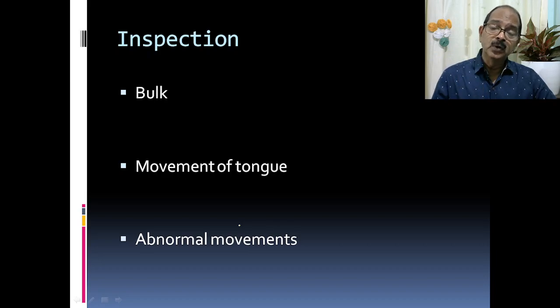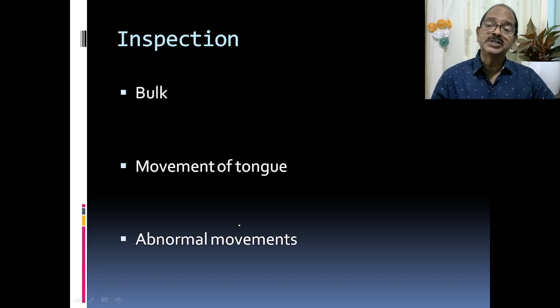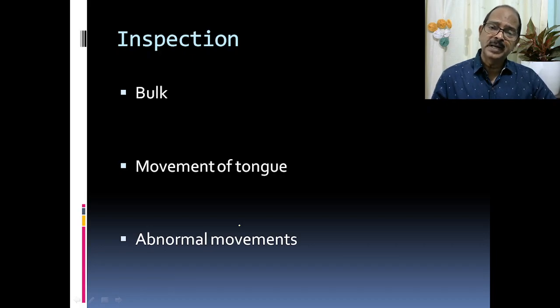The role of the muscle is to push, not to pull. So when there is a paralysis, the deviation will be to the same side.